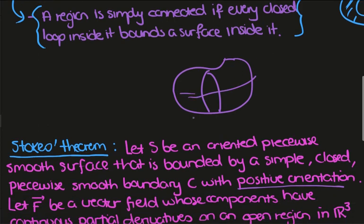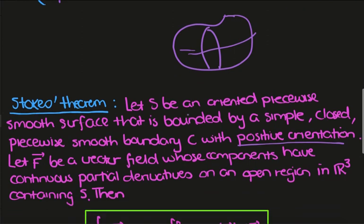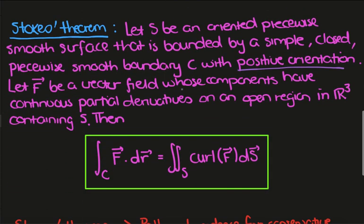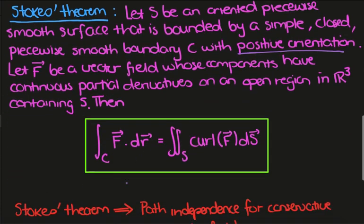And this is an example where we could apply Stokes' theorem. And Stokes' theorem tells us that this line integral here is given by the surface integral of the curl. And what we want to do is, assuming this formula, show that path independence comes out of this.